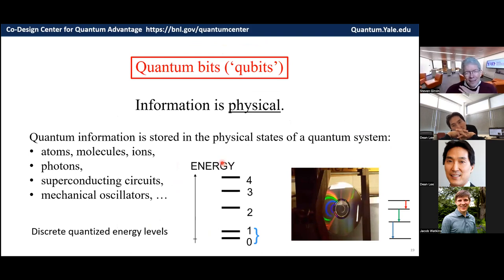So quantum information, quantum bits are physical things, and quantum information is stored in the physical states of atoms or molecules or ions or photons. I'm going to be telling you about superconducting electrical circuits. You can also use mechanical motion, any system that has a discrete quantized energy levels, you can pick the lowest two and manipulate these. You can be in this state, that's a zero, or in this state, that's a one, just like I showed you for these atoms. And so this physical thing, an atom or a circuit or whatever it is, can be used to store information.